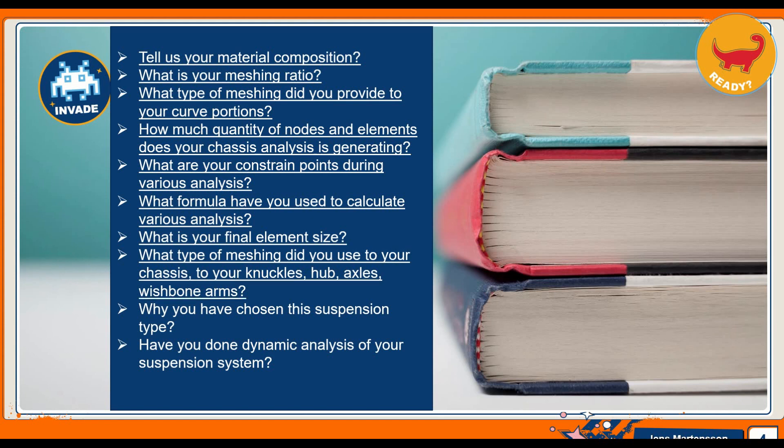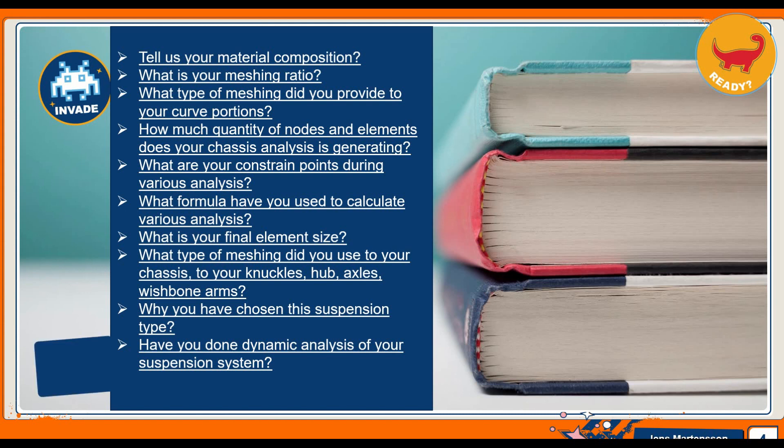17. What is your final element size? 18. What type of meshing did you use for your chassis, knuckles, hub, axles, and wishbone arms?